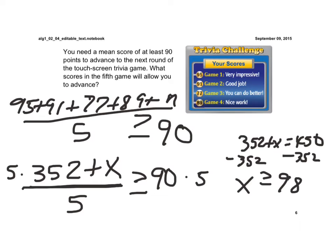So to have an average score of a 90, we'd have to score at least a 98 on our last game.